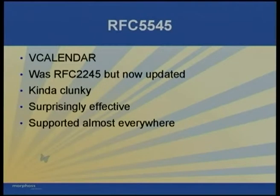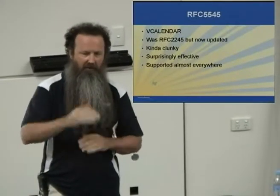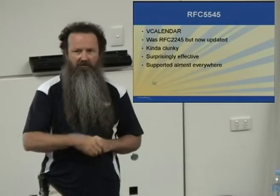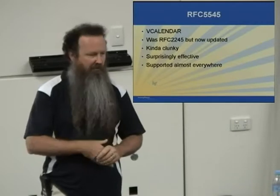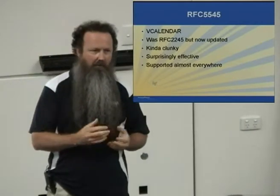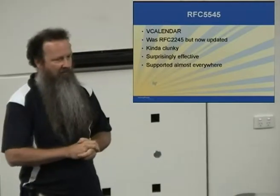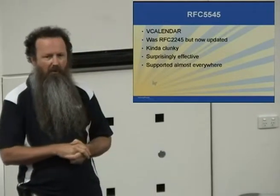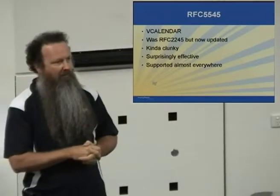The main standard currently used in calendaring is defined in RFC 5545, which replaces RFC 2445. This is the standard that defines the iCalendar format, containing a vCalendar block, and then vTimeZone, vEvent, vTodo, and vJournal. It was invented quite a long time ago, which is often the case with standards — email looks pretty clunky these days, and iCalendar looks fairly clunky too.